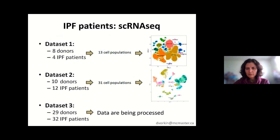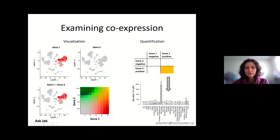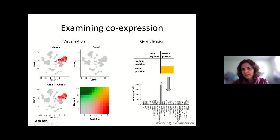These numbers show the percent of cells expressing both genes out of each population. For example, 2,000 macrophages expressing both genes is only 7.5% of total macrophage cells. On the other hand, smooth muscle cells have a very low total — approximately 400 cells — but those expressing both genes constitute almost 43%. So it's very important to look at these things in percentage as well.